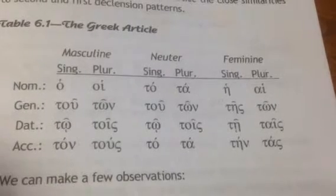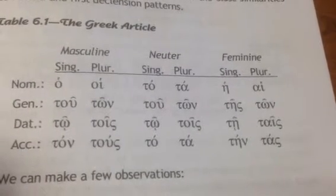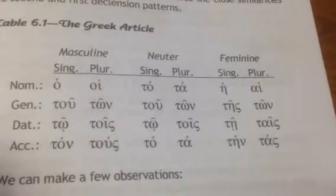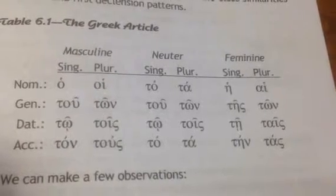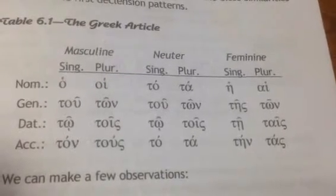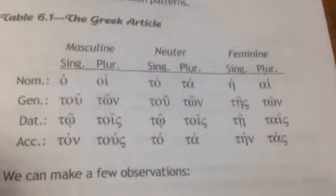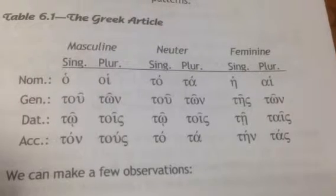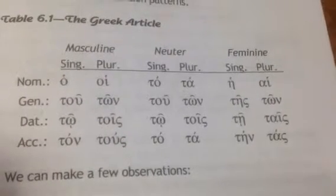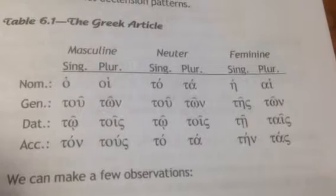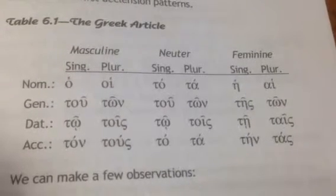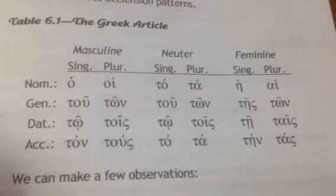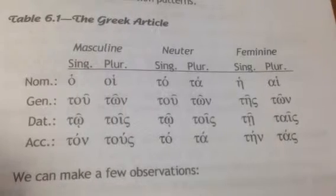Notice that for the masculine and the neuter, the interiors repeat, as well as for the feminine. The genitive plural repeats as well. And then you have to just memorize the nominatives. Because the third declension is not used for the articles, when you encounter a third declension noun with an article, it will be joined to an article of like gender, but may not look alike.